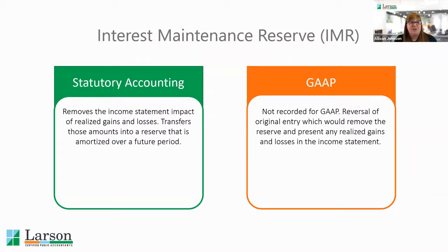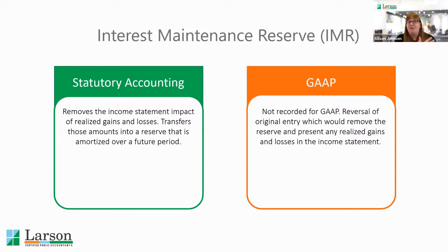The Interest Maintenance Reserve, because it's dealing with realized gains and losses that are in the income statement, it's not necessarily going to have an impact on surplus. For statutory, when you're booking this, you'll back out the income statement activity for the year. Those gains and losses are transferred into this reserve, and there's a schedule that will show how they're to be amortized over a certain amount of time. For GAAP purposes, it's just the reversing of the entry, so those realized gains and losses will be back in the income statement.